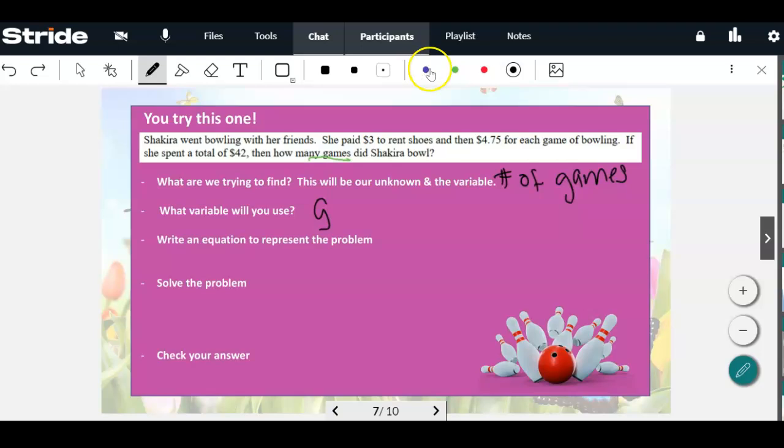So writing the equation to represent the problem. We know she paid $3 to rent shoes. That's just a flat fee, like the plus 3 that's going to add on. But $4.75 for each game, you have to write as $4.75 times the number of games that she bowled. So then we're going to put that together. $4.75 times G plus the $3 shoe rental. And then it says she spent a total of $42. So those added together has to come up to $42. Then you can solve and check on your own.